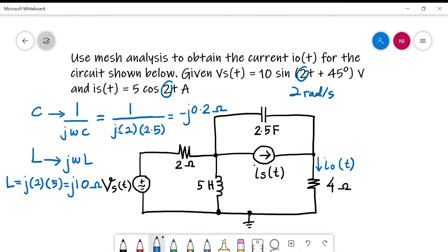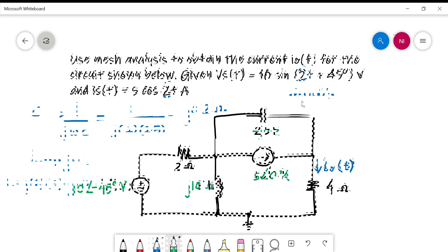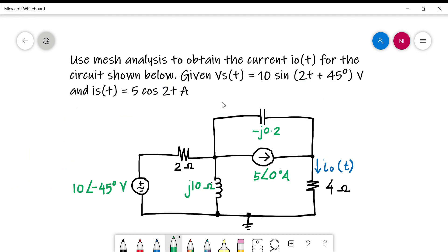After we insert the value of omega and C, we should get C equals -j0.2 ohms. And the inductor's value is j10 ohms. For the last step, redraw the circuit from time domain to frequency domain values.